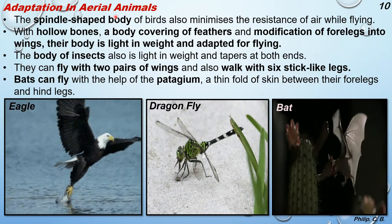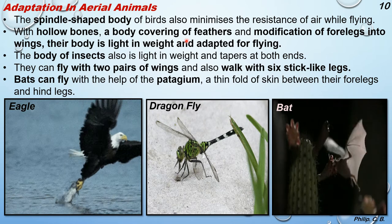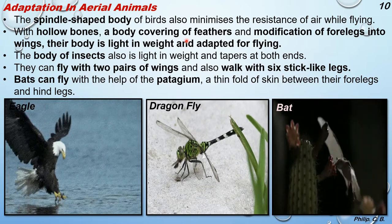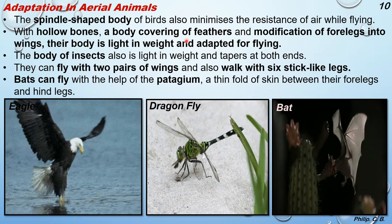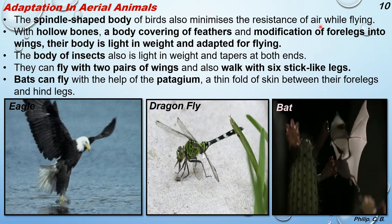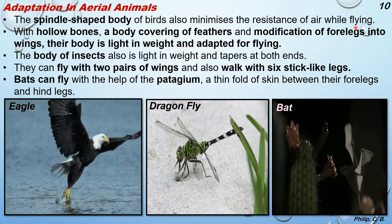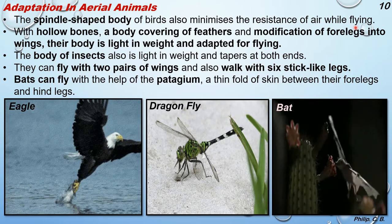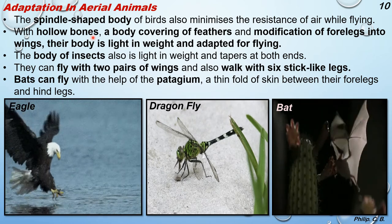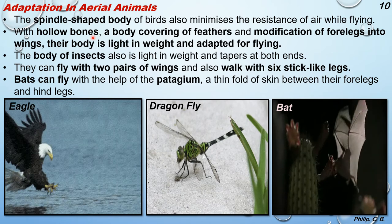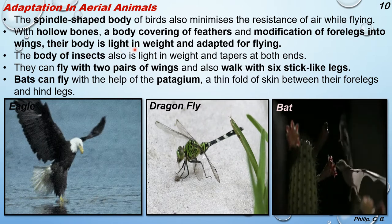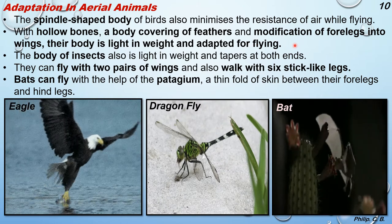Further, adaptation in aerial animals - animals which fly. Aerial animals include not only birds but also insects and mammals like bats. The spindle-shaped body of birds minimizes the resistance of air while flying - thick in the middle and tapering at both ends. Birds have hollow bones so that larger birds can fly easily, as thick bones would make it very difficult to carry the body weight. With a body covering of feathers and modification of four limbs into wings, their body is light and adapted for flying.